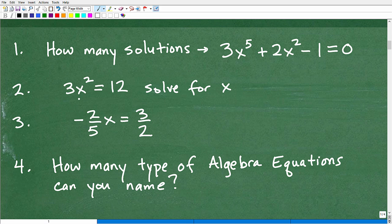I'll read them to you, and then we'll go over them so you can get your grade. So the first one is, how many solutions does this thing have? Okay. The second question is, 3x squared is equal to 12. I'd like you to solve for x. Number three, I got negative 2 fifths. x is equal to 3 halves. I'd like you to solve for x. Here, in fact, I'll just put that in here. Solve for x. And then number four, I want you to write down, how many types of algebra equations can you name? Okay? So that's an interesting question.